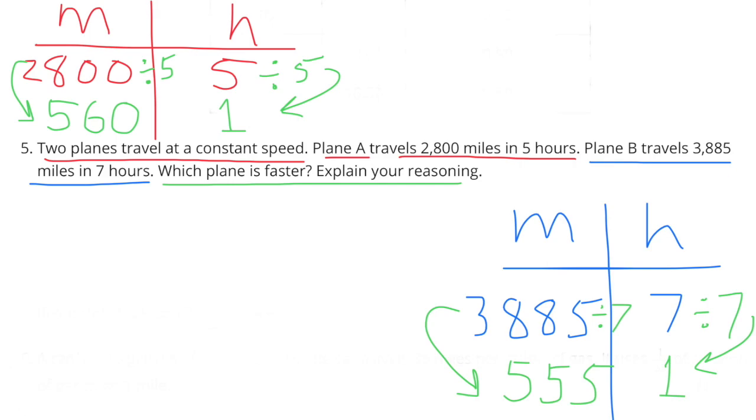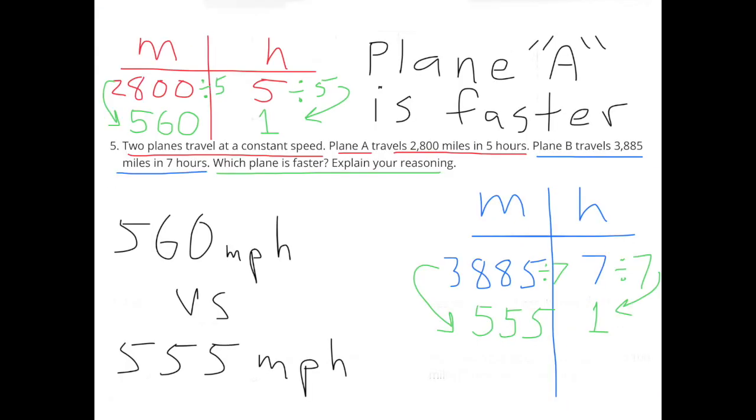Plane A is represented by the table above. 5 hours divided by 5 equals 1 hour. 2,800 miles divided by 5 equals 560 miles. The chart on the bottom represents plane B. 7 hours divided by 7 equals 1. 3,885 divided by 7 equals 555. Plane A is faster. Plane A travels 560 miles in 1 hour compared to plane B traveling only 555 miles in 1 hour.